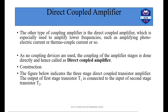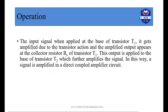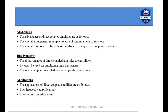A direct coupled amplifier uses no coupling devices — we can see three transistors T1, T2, and T3 directly connected to the next stages with no coupling elements. Advantages: the circuit arrangement is simple since no coupling is required, so component count and cost are low, with no expensive coupling devices like transformers needed. Disadvantages: it cannot be used for amplifying high frequencies, and the operating point shifts due to temperature variation, since transistors are sensitive devices.